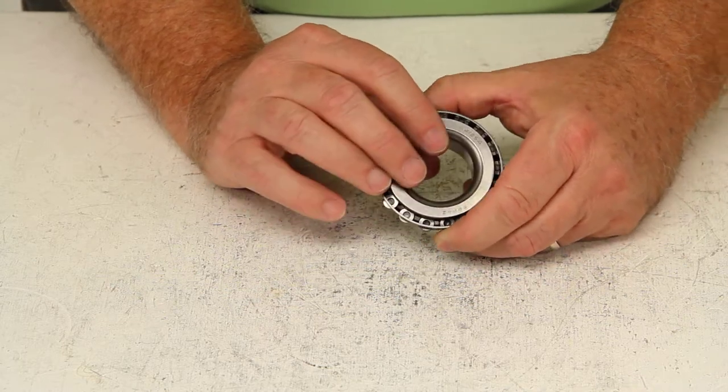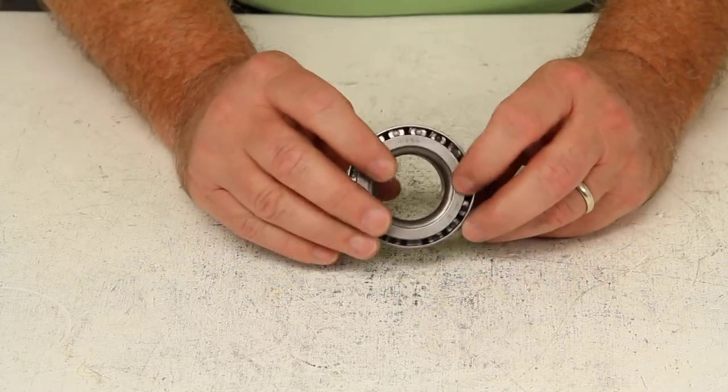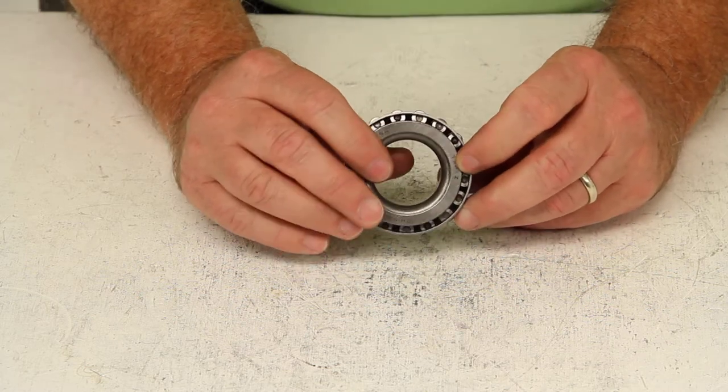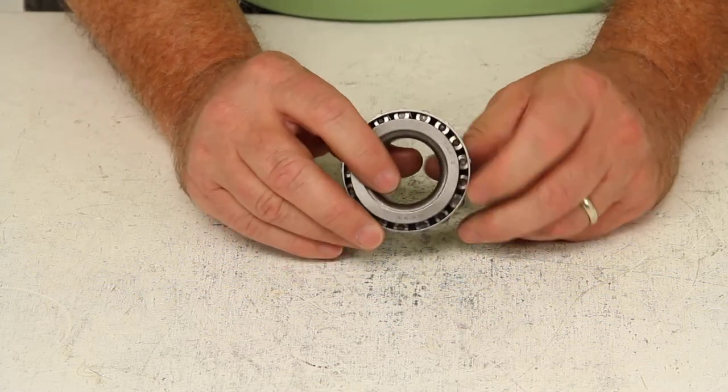Now your bearing might be a different brand, it has a different number. If you could just give us the part number, we can cross-reference it to get you the correct trailer bearing.